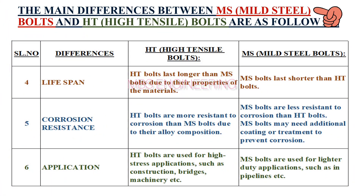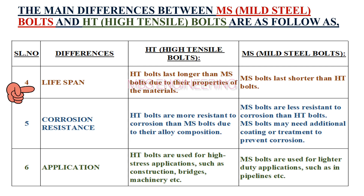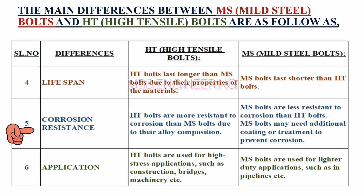Now, continuing the main differences between MS (mild steel) bolts and HT (high tensile) bolts. Fourth point: we will consider the lifespan. HT bolts last longer than MS bolts due to the properties of the materials, while MS bolts last shorter than HT bolts. Fifth point: we will consider corrosion resistance. HT bolts are more resistant to corrosion than MS bolts due to their alloy composition, while MS bolts are less resistant to corrosion.